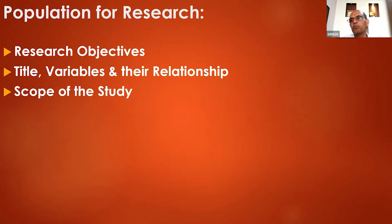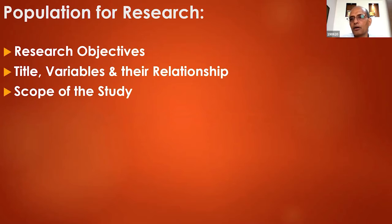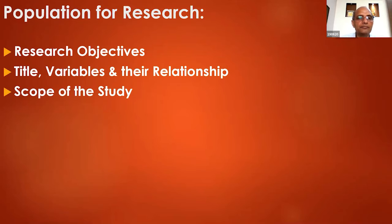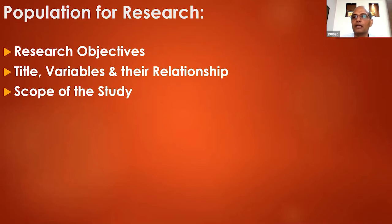The next question is: what population should I select for my research? It comes directly from your research objective — the objective would point towards the population. Your title of the thesis or research paper, the variables and their relationship — you want to find a population where knowledge about those variables exists. And the scope of the study will determine the population, since in scope I talked about demographic and geographical issues, so a lot of clarity comes about your population.